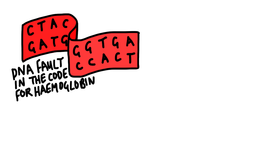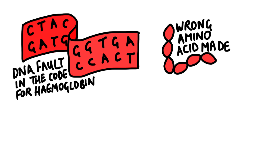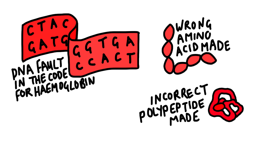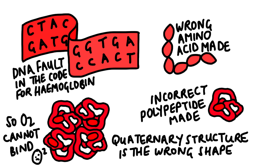If there were to be a fault in the hemoglobin's DNA, then the wrong amino acid would be made, meaning an incorrect polypeptide would be made, and so oxygen would not be able to bind.